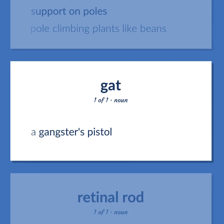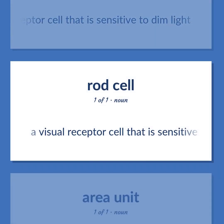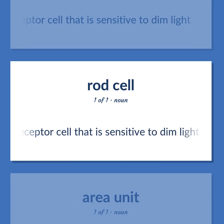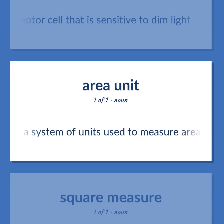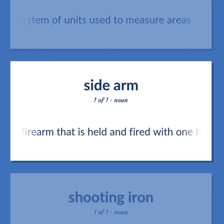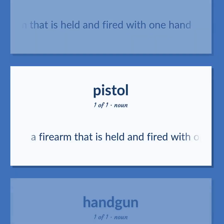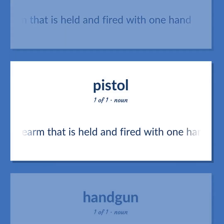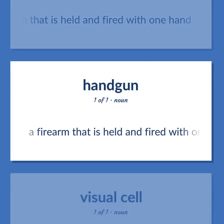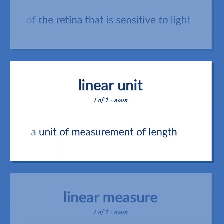A gangster's pistol. A visual receptor cell that is sensitive to dim light. A system of units used to measure areas. A firearm that is held and fired with one hand. One of the cells of the retina that is sensitive to light. A unit of measurement of length.